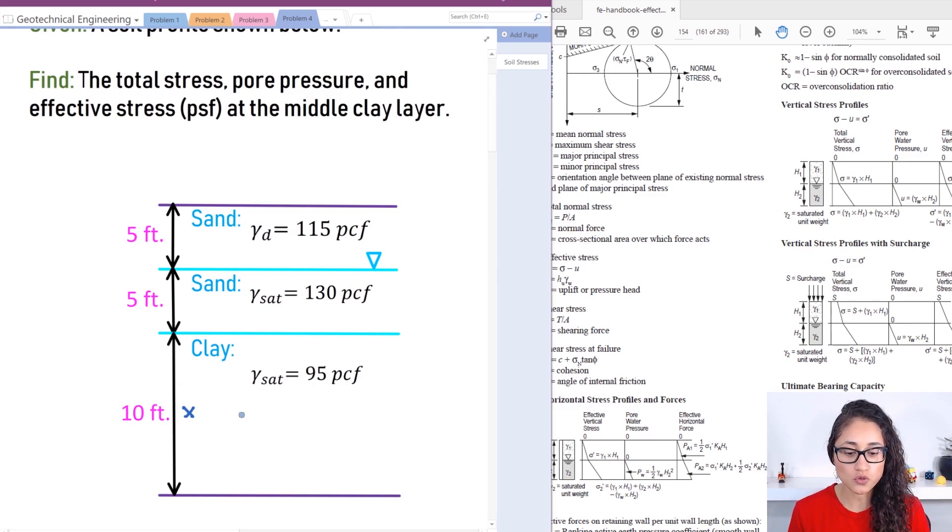Total stress, or to calculate pressure in general, as you guys learned from fluid mechanics, at a given depth we do usually gamma times h, right? Total stress in soil mechanics we usually denote it as sigma. So we have sigma equals gamma h. That's how we usually calculate the total stress.